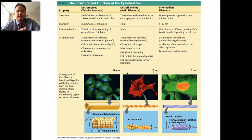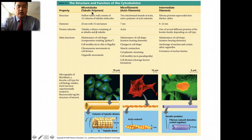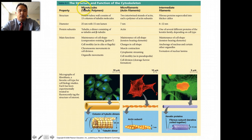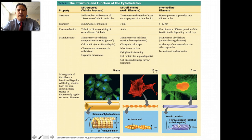Mr. Xu talked about the cytoskeleton. Just think of it as a fancy word for the skeleton of the cell. It goes from microtubules to microfilaments to intermediate filaments — here are pictures of the three.